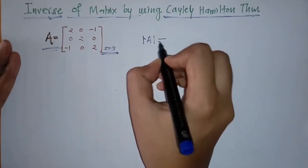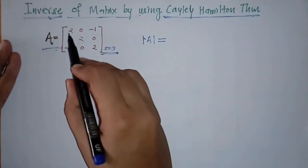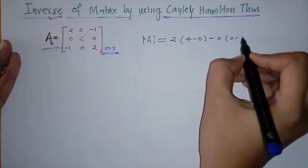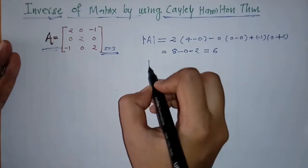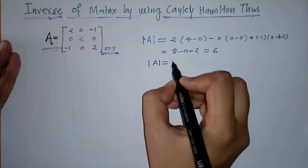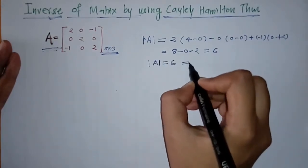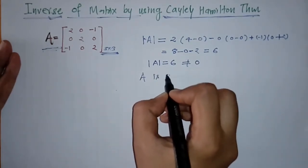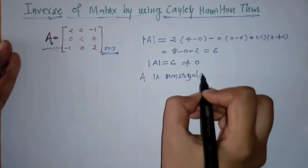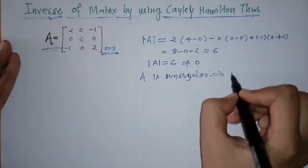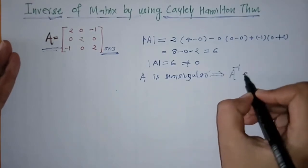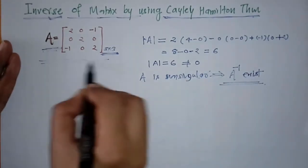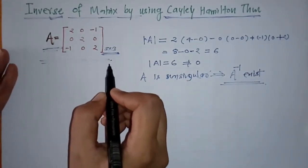We will find the determinant of A. We know how to find it, and we get the determinant of this matrix equals 6, which is not equal to 0. That means matrix A is non-singular, which implies that A-inverse exists. So now we can find the inverse of this matrix.